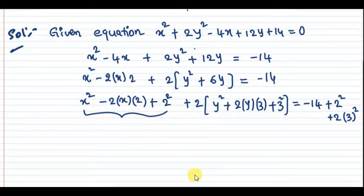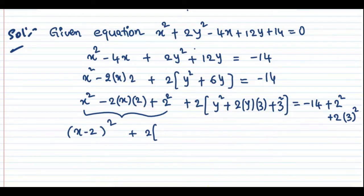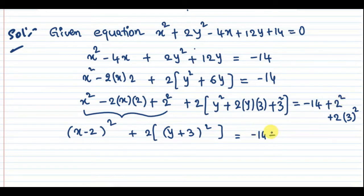So we get (x - 2)² for the x-terms, which fits a² - 2ab + b² = (a - b)². And for the y-terms, we get 2(y + 3)². The right-hand side becomes: -14 + 4 + 18 = 8. So (x - 2)² + 2(y + 3)² = 8.